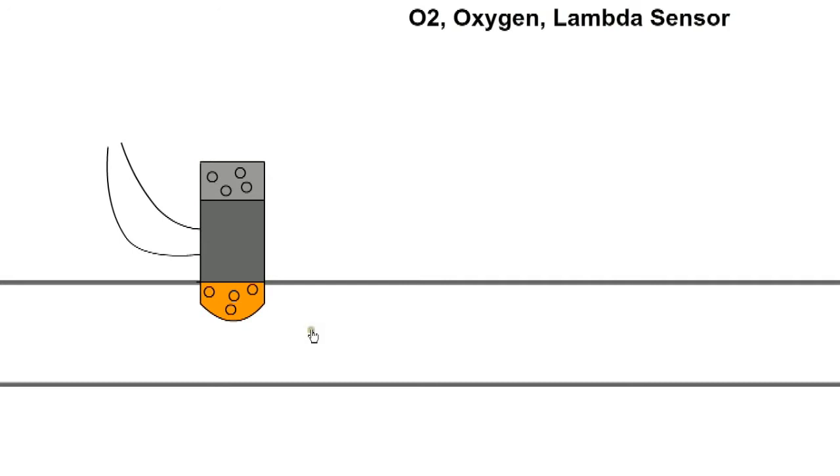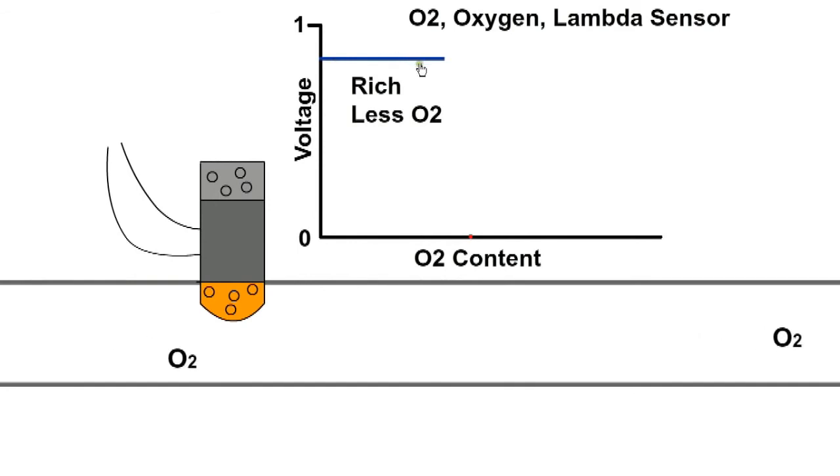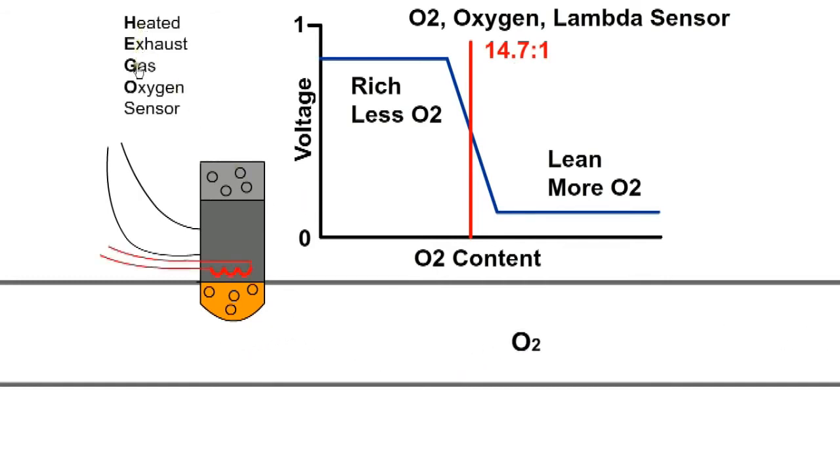The O2, oxygen, or lambda sensor measures the amount of oxygen in the exhaust gas compared to the oxygen in the outside air. It generates a voltage from almost 1 volt in rich conditions to near 0 volts in leaner conditions, and the signal is sent to the ECU. The ideal air-fuel ratio occurs near the change from 1 volt to 0. For a petrol engine, the ideal air-fuel ratio is 14.7 to 1 by weight. Sometimes a HEGO sensor is used, which includes a heating element that gets the sensor up to working temperature faster.